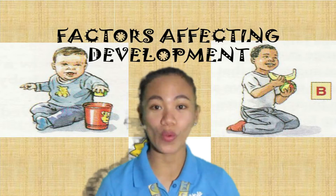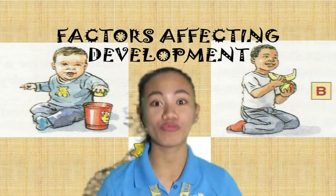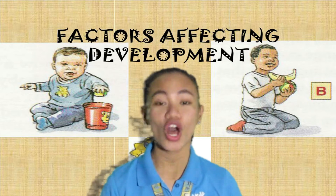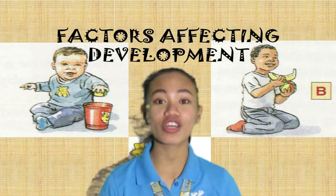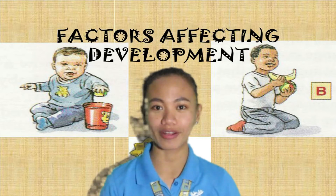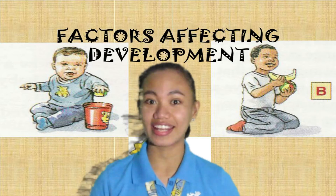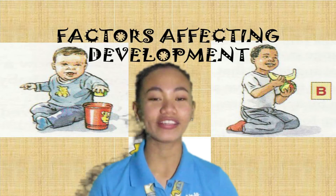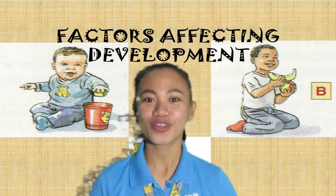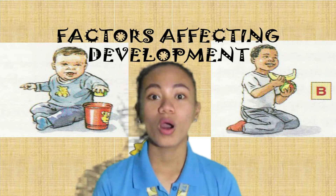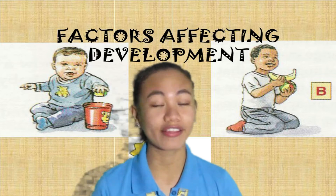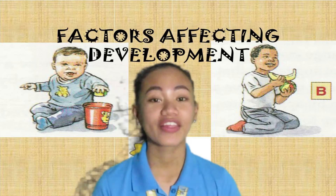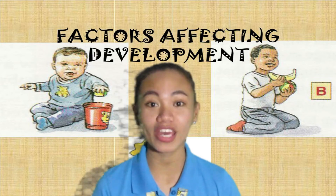How children grow and develop depend on both internal and external environmental factors, some of which we have no control over. Having a good understanding of what children need at each stage of their growth and development helps us raise them better. Although the terms growth and development are used synonymously, they have different meanings biologically.